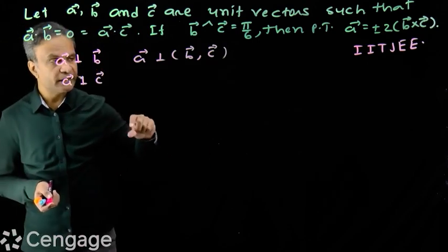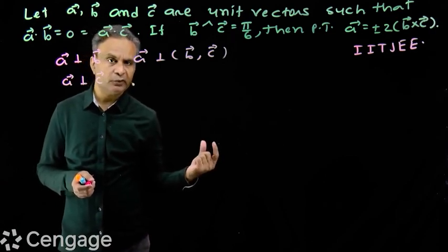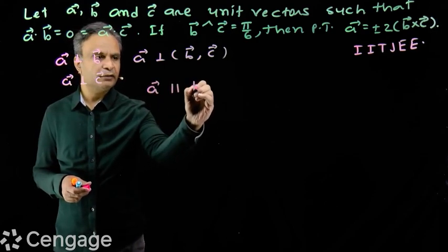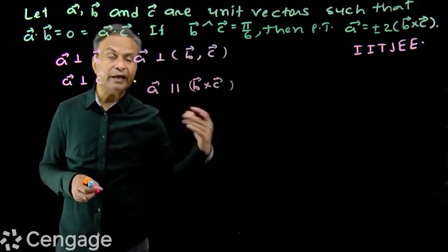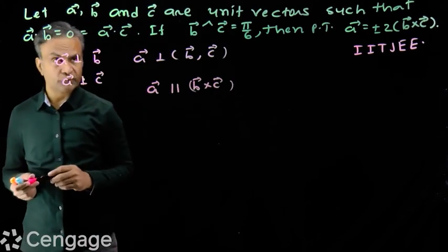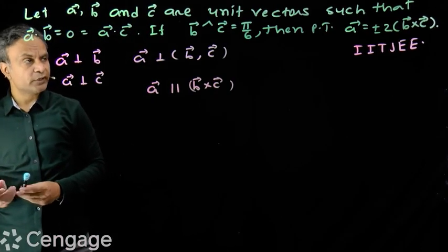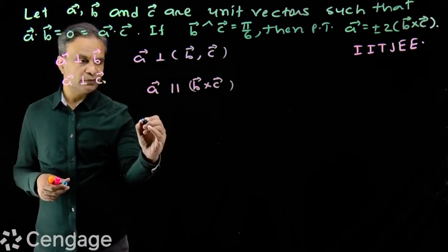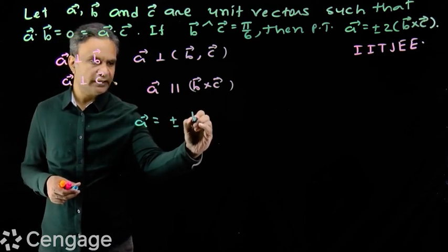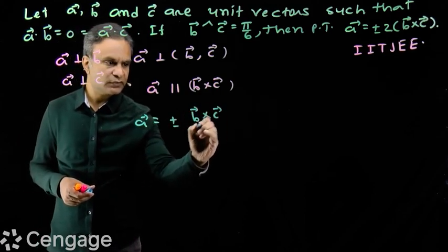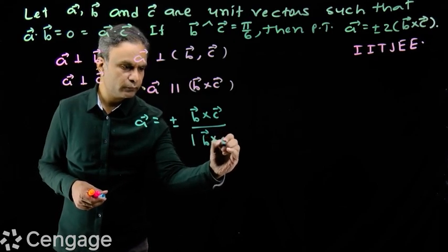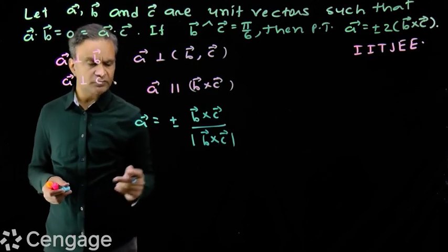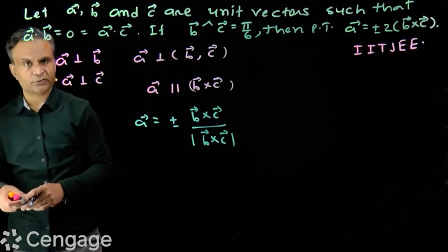Since vector a is perpendicular to both b and c, vector a will be parallel to b cross c — it will be in the direction of b cross c. Since a is a unit vector, the unit vectors in the direction of b cross c will be plus or minus b cross c over the modulus of b cross c. We have plus or minus because there are two vectors in opposite directions.